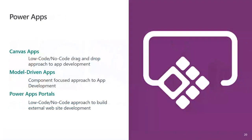Now we're going to switch gears and talk about Power Apps. There are three key types: Canvas apps, which are the low-code, no-code drag-and-drop approach to app development; Model-driven apps, which are more component-focused; and Power Apps portals, which are a low-code, no-code approach for building external websites to surface content to users external to your organization.